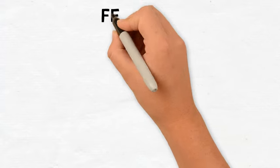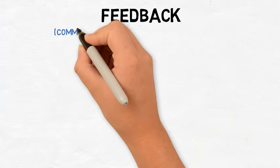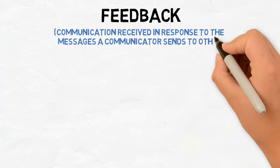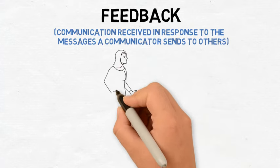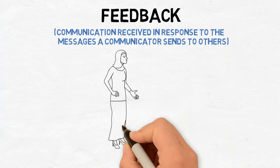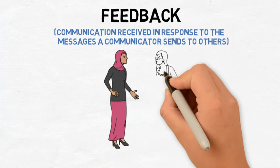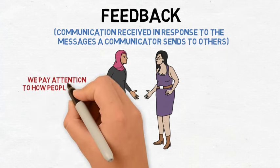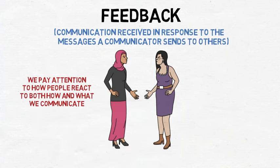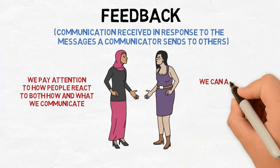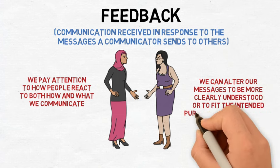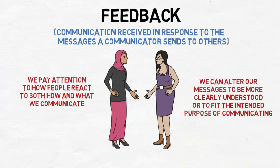A final element in the process of communication is feedback. Feedback is communication received in response to the messages a communicator sends to others. When communicating with somebody, how do you know that they agree with what you communicated, are angry with what you communicated, or not paying attention at all? We know because during or after sending information, we pay attention to how people react to both how and what we communicate. When interpreting others' reactions to our communication, we can alter our messages to be more clearly understood or to best fit the intended purpose of communicating.